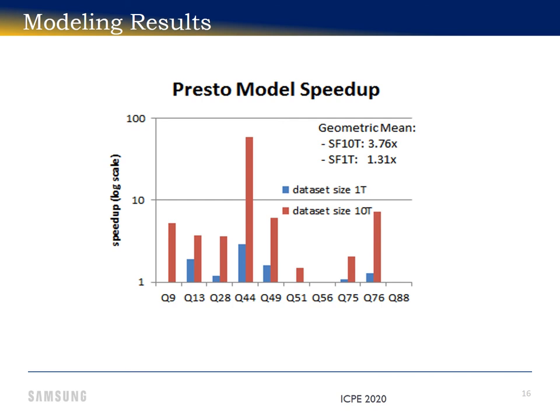Because we are alleviating multiple bottlenecks — not only the CPU load, but also memory and network — we see across the board that the speedup increases at higher scale factors.